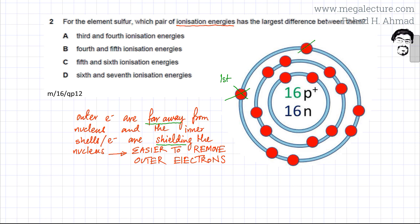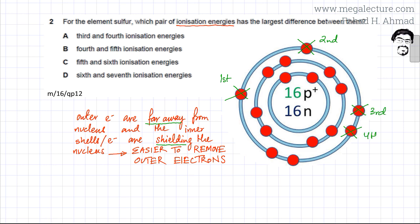Removing the second electron would also be relatively easy — the distance is still far and the shielding effect is still there. Removing the third, fourth, fifth, and sixth electrons are all similarly going to be relatively easy.